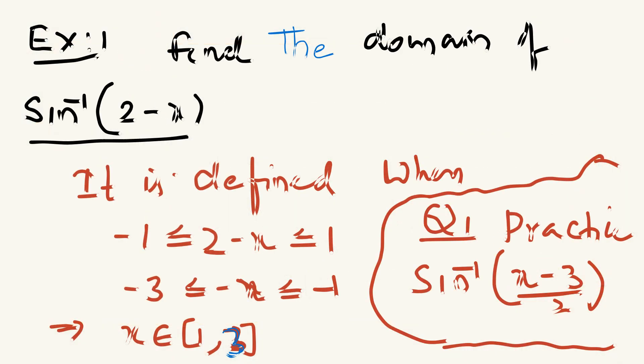Here is question number 1: Find the domain of sin⁻¹(2 - x). This question is simply based on the fundamental concept of sin⁻¹(x). We know that sin⁻¹(x) is meaningful — whatever argument is given, if it is defined or meaningful, the argument should lie between -1 to +1. So whatever is inside here should lie between -1 to +1.